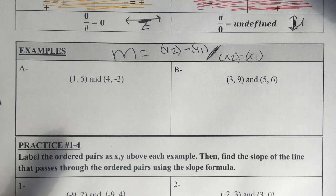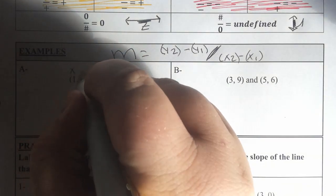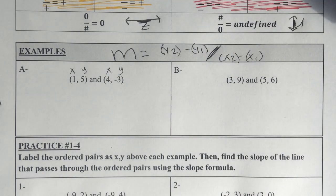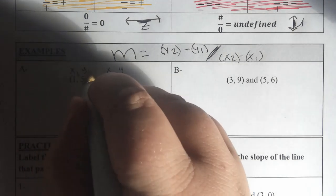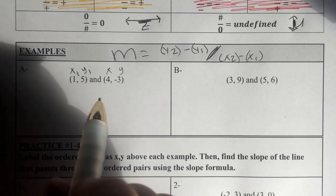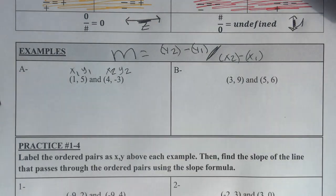The first thing I'm going to do is I'm going to label the ordered pairs x and y, x and y. And then I need to decide which one's going to be the first ordered pair and which one's going to be the second. So I'll say this is the first ordered pair, meaning that's going to be x1 and y1. That means this is going to be the second ordered pair, so x2 and y2.